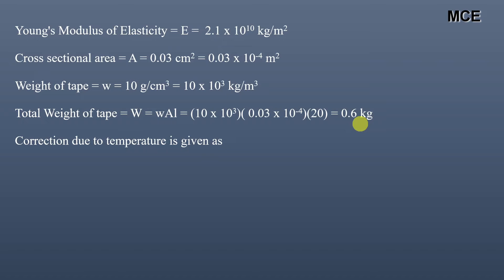The correction due to temperature is given by: Ct = α(Tm − Ts) × L. Substituting values: 11×10⁻⁶ × (32 − 20) × 680 = 0.0898 meters. This is the temperature correction for the total length of the line.